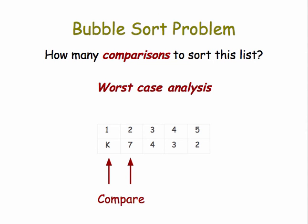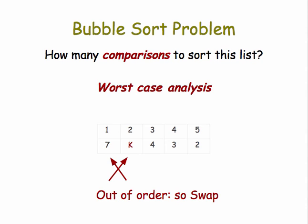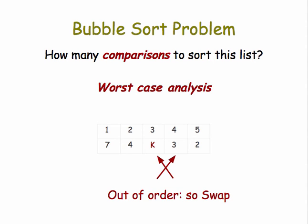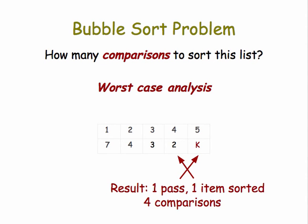First, we compare the king and the seven. They're out of order, so we swap them. Then we compare the king and the four, out of order, so we swap them. Then the king and the three, out of order, we swap them. King and the two, out of order, so we swap them. So after one pass, the king has bubbled up to the top and we've made four comparisons.